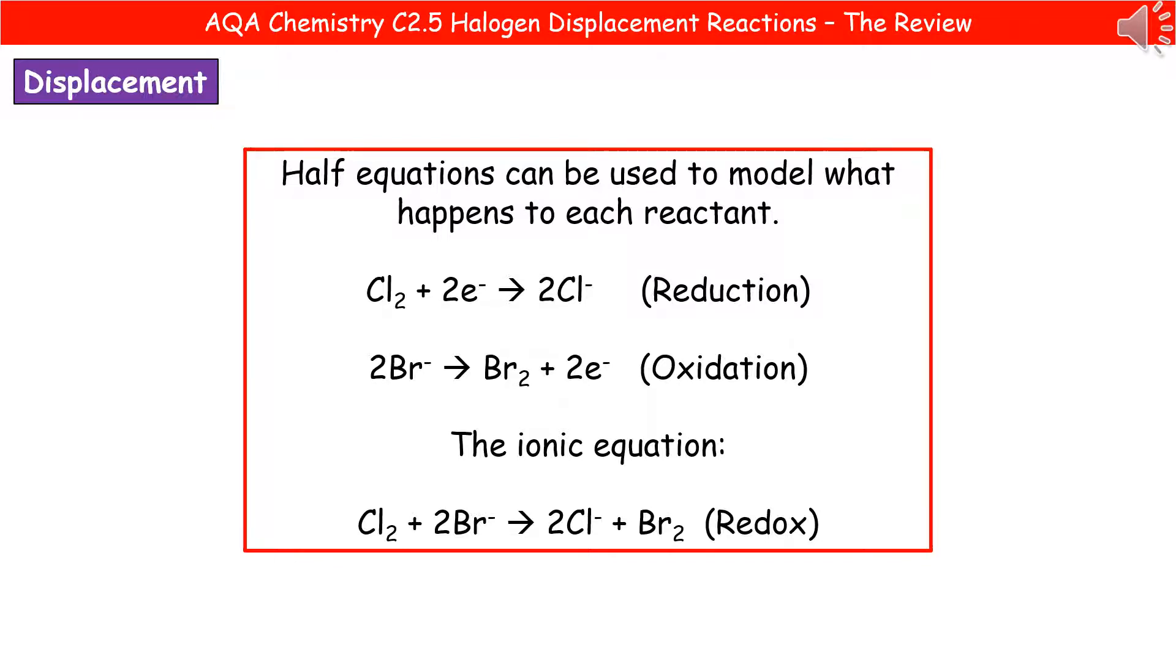If we then put that together as an ionic equation, we've got the one at the bottom. Cl2 plus 2Br- makes 2Cl- plus Br2. Because what we're actually doing here is just focusing on those bits that are changing. The sodium is the same on the left and the right, so we can ignore it. There's no difference there. So the ionic equation just has the bits that have changed, and because we've got both reduction and oxidation taking place, we refer to this as a redox reaction.